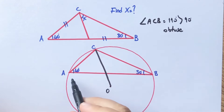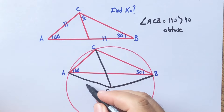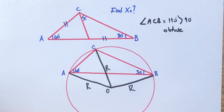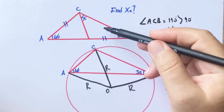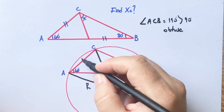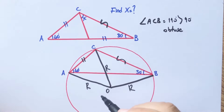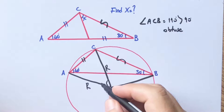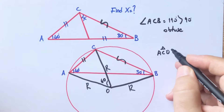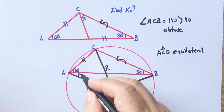If we connect the center O to the triangle's corners, these three lengths must each be a radius of the circumcircle. These two triangles are exactly the same, so these two lengths and these other two lengths must be equal. If here is 30 degrees, this central angle must be 60 degrees, and we get an equilateral triangle.